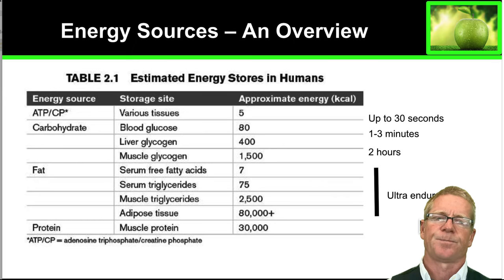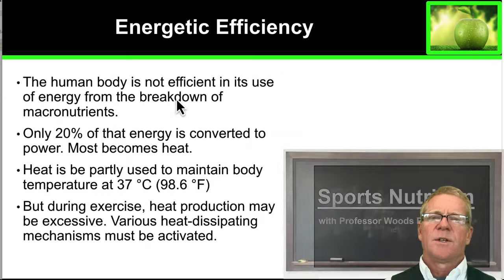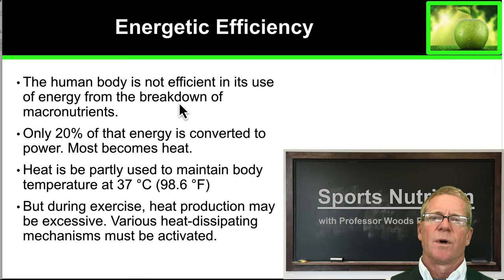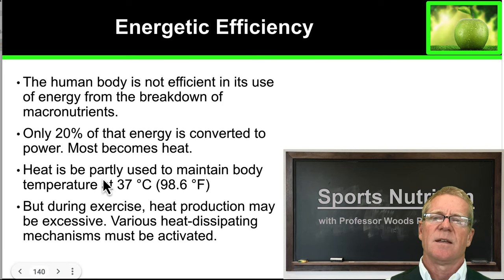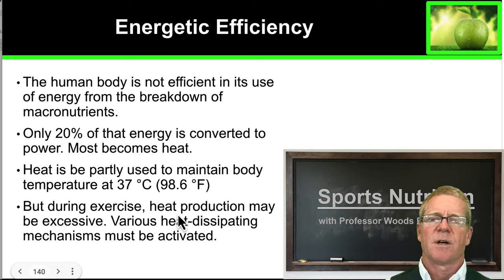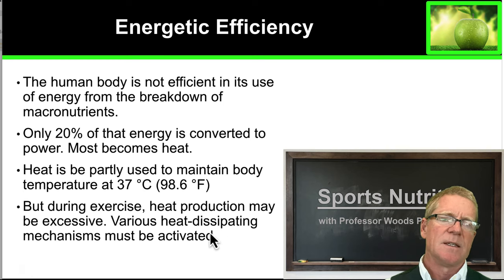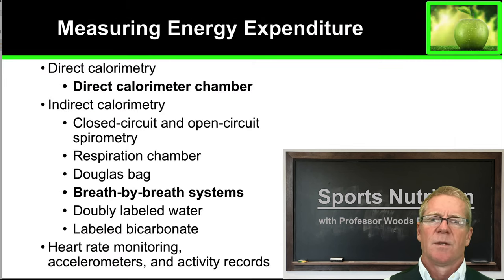In terms of energetic efficiency, the human body is not very efficient — only about 20 percent of the energy in our foods is converted to power. Most of it becomes heat, which is partly used to maintain body temperature, but most is dissipated into the environment through heat-dissipating mechanisms like sweating.